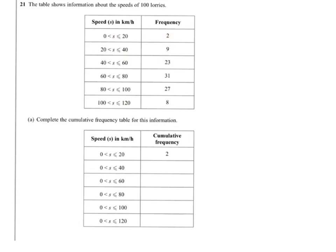So we need to fill in our cumulative frequency. The first one's been done, as they're always the same. You must remember the second one is from 0 to 40. So now we have to take the 0 to 20 and the 20 to 40 to go from 0 to 40. So it's 2 plus 9, quite straightforward really.